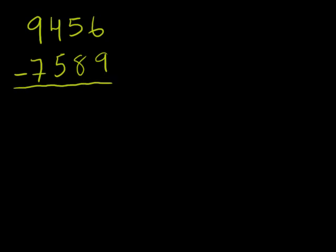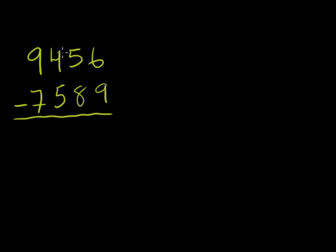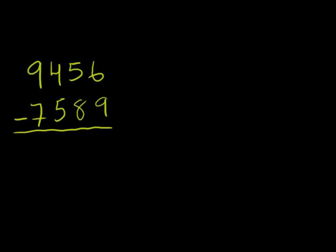So let's try out a couple of problems. Let's have 9,456 minus 7,589. So the way I do this in my head, I say that 9,456 minus 7,589. The first thing I do is I say, well, what's 9,456 minus just 7,000? That's pretty easy, because I just take 9,000 minus 7,000.